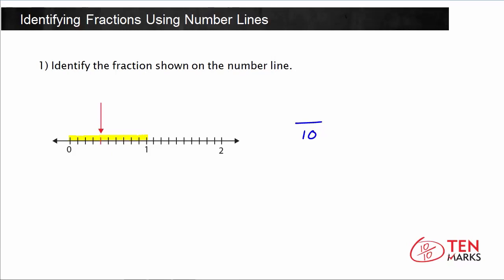Now we need to count: 1, 2, 3, 4 — the red tick mark is the fourth equal part between 0 and 1. So the fraction shown on this number line is 4 tenths. 4 is the numerator because we're using four parts, and 10 is the denominator because we have 10 total parts in the whole.